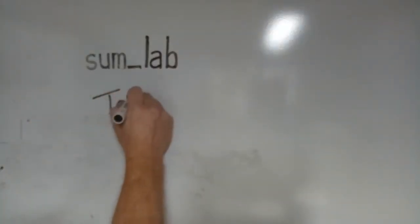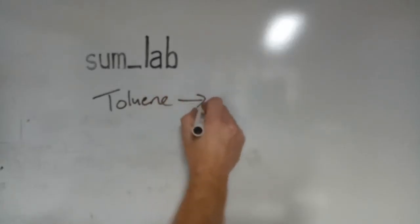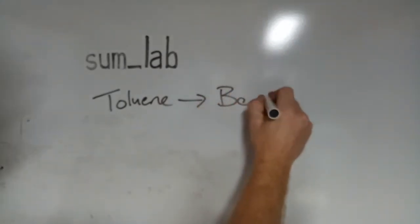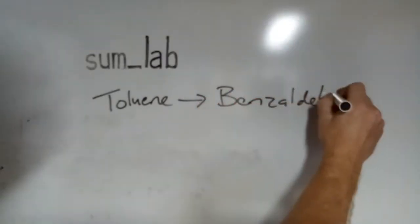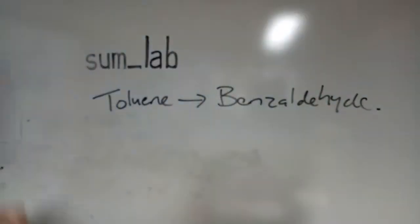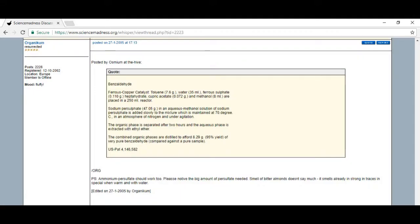Welcome to SUMLAB. Today's procedure is the production of benzaldehyde through the oxidation of toluene. This procedure was posted on the Science Madness website a number of years ago. You can pause and take a look at the details if you wish, but there aren't actually very many details.